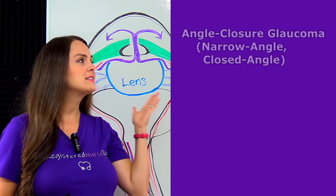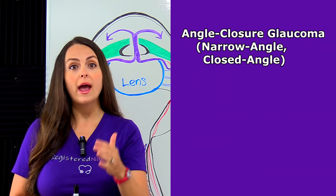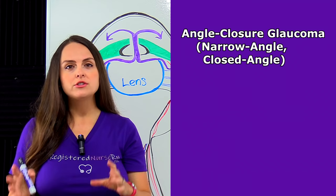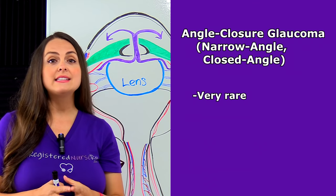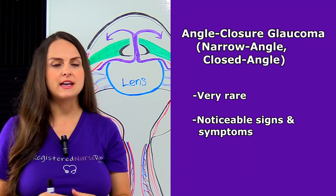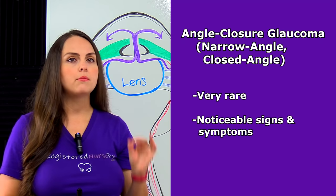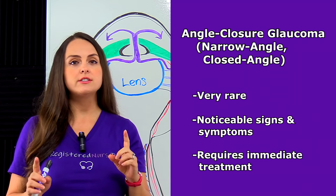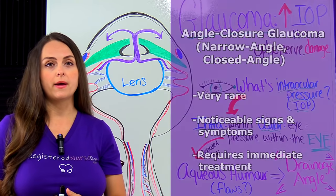The next type is called angle closure glaucoma. You may also hear this referred to as narrow angle glaucoma or closed angle glaucoma — all those terms refer to this type. This type of glaucoma is very rare, and its signs and symptoms the patient is definitely going to notice. Whenever the patient has this type, it requires immediate emergency treatment. As a nurse, it's very essential that you know the differences between the signs and symptoms of open angle and angle closure glaucoma.